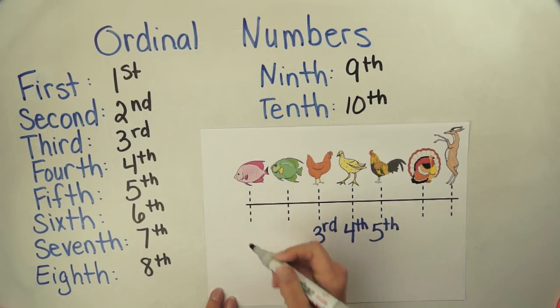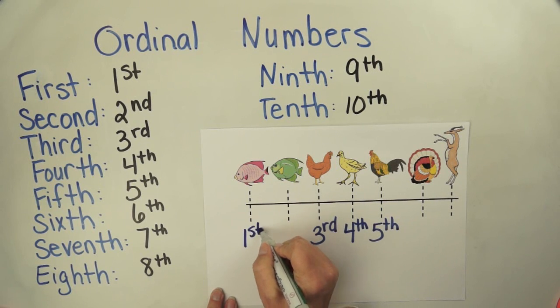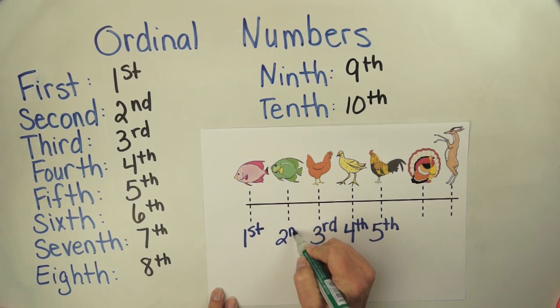What's at the beginning? The beginning is always the 1st. Between 1st and 3rd is 2nd, 1st, 2nd.